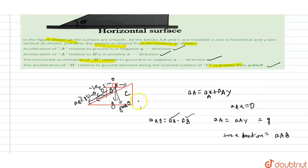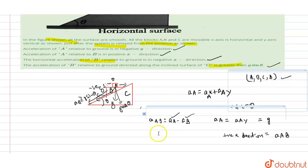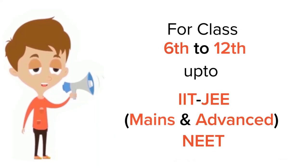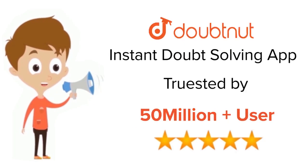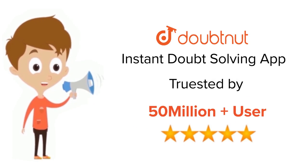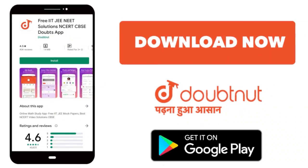So here we considered the angle of the inclined plane to be θ. We see that options A, B, C and D are all correct. Thank you. For class 6 to 12th, IIT-JEE and NEET level — trusted by more than 5 crore students. Download DoubtNet app today.